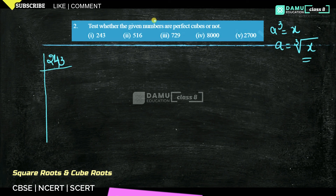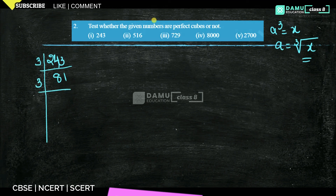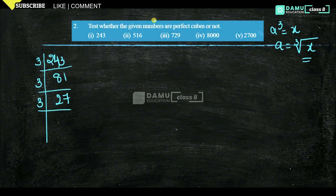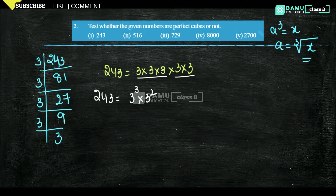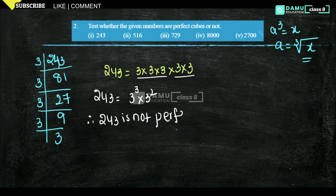Dividing 243 repeatedly by 3, we get: 243 = 3 × 3 × 3 × 3 × 3, which is five 3s. We pair them as groups of three: we get one group of 3³ and a remaining 3², which is 3³ × 3². Since there is a remainder that doesn't form a complete cube, 243 is not a perfect cube.